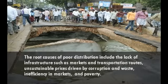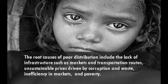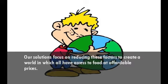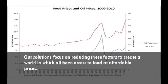The root causes of poor distribution include the lack of infrastructure such as markets and transportation routes, unsustainable prices driven by corruption and waste, inefficiency in markets, and poverty. The solution focuses on reducing these factors to create a world in which all have access to food at affordable prices.